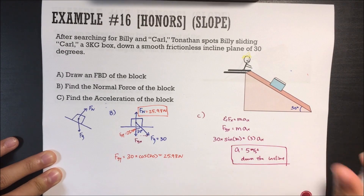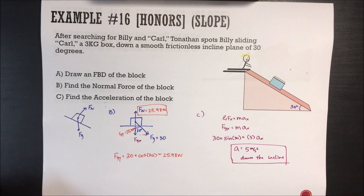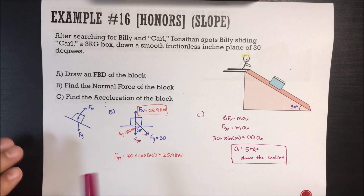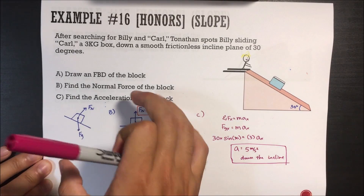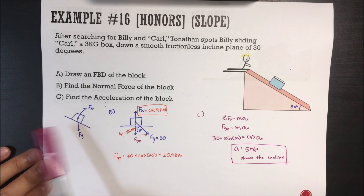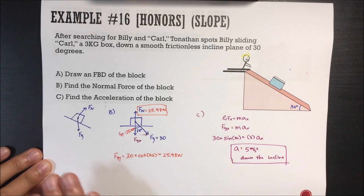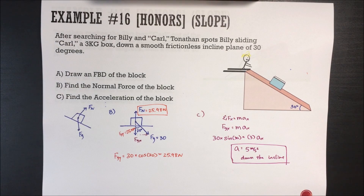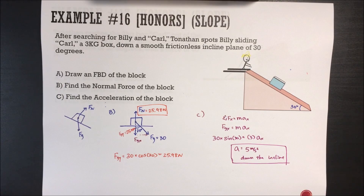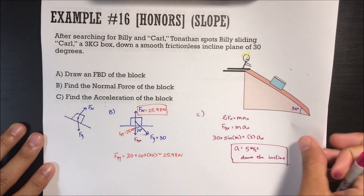And that's how you do the traditional incline plane problem. First draw the free body diagram, then maneuver it so it's on a flat plane — it makes everything a lot easier. But what happens with Tonathan? Furious, Tonathan runs to his beloved box and begins pushing it back up the hill.